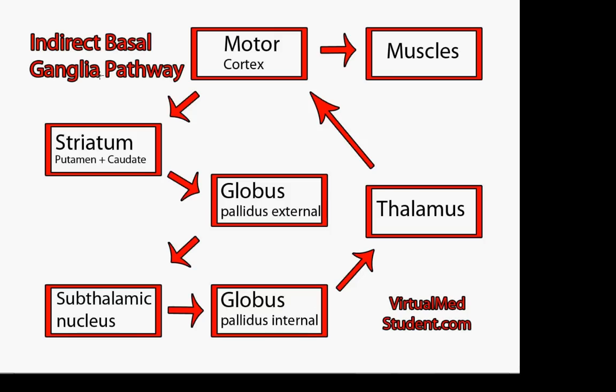This is the second video in the basal ganglia lecture, and in this video we're going to discuss the indirect pathway. The basal ganglia is not only important in initiating motor movement, which we saw in the direct pathway video, but it's also important in inhibiting unwanted movement from occurring, and it does so via the indirect pathway.